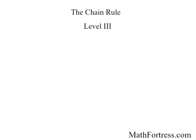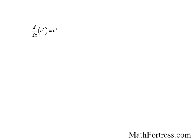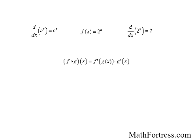The chain rule, level 3. In our previous videos, we learned that the derivative of a natural exponential function was equal to itself. But has it occurred to you what the derivative of exponential functions with a base other than e was equal to? Say for example the function f of x equals 2 to the power of x. What would be the derivative equal to? Well, this is where the chain rule along with some mathematical manipulation comes into play.